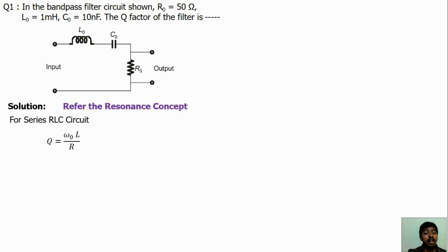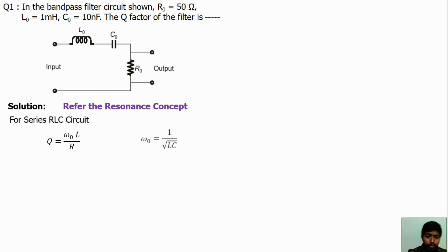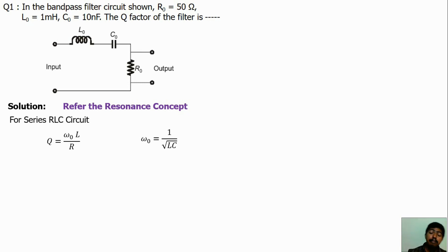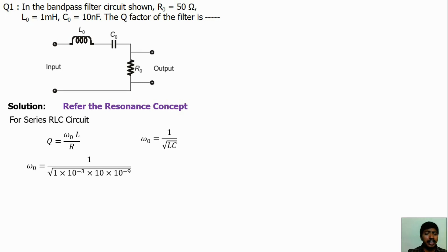L and R values are known, but we have to find ω₀. We know the resonance frequency formula: ω₀ equals 1 divided by the square root of LC. We know the L value and C value. Substituting L₀ and C₀, we can get the resonance frequency as 10⁶ divided by the square root of 10.